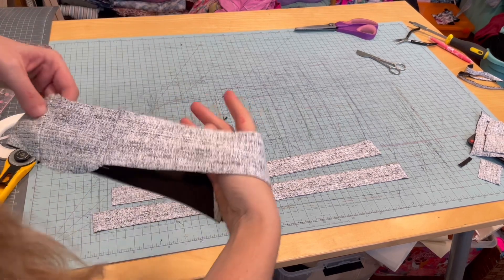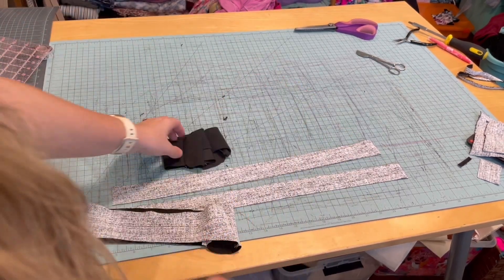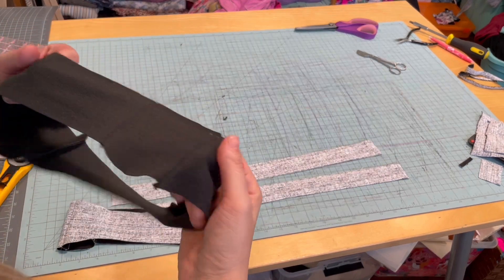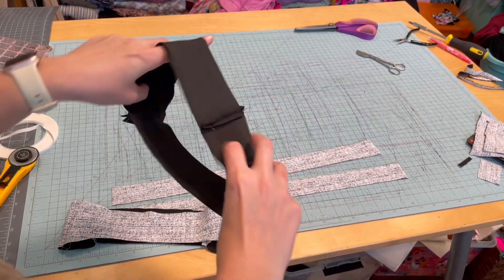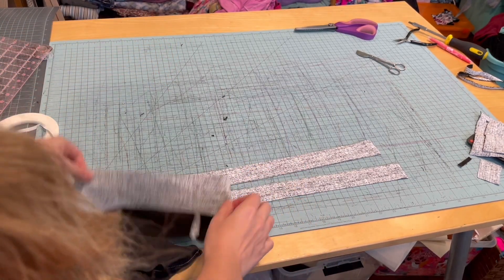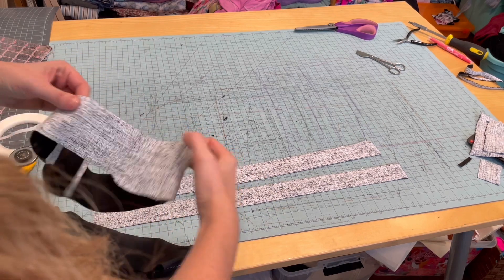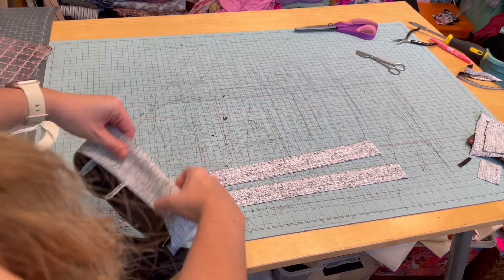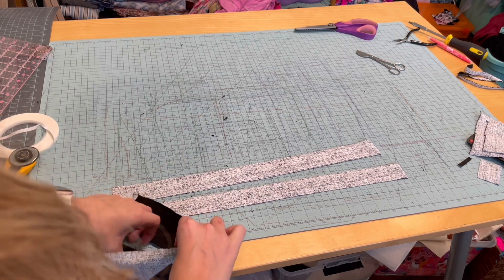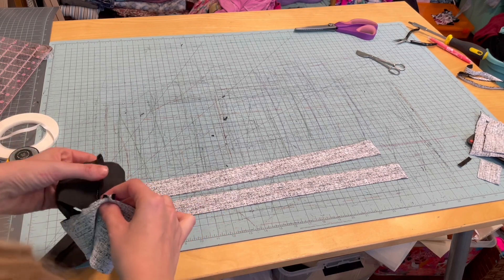So we now have two circles of fabric all sewn together. We're going to take the lining, and with the lining side inside and the main side outside, we're going to put those pieces or those circles together. You want to line up the front pieces and then line up the back pieces.